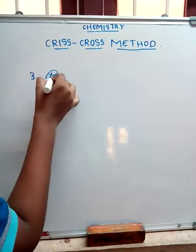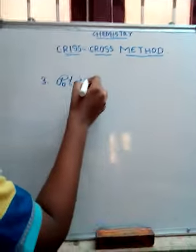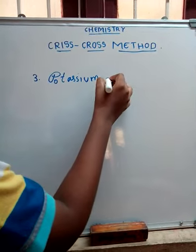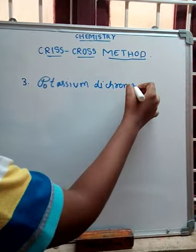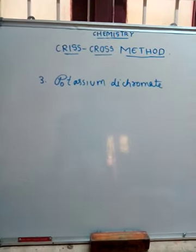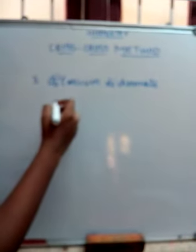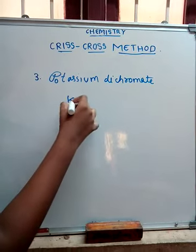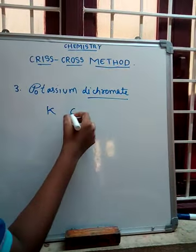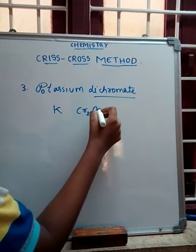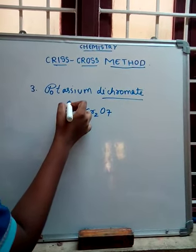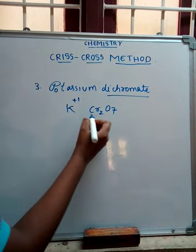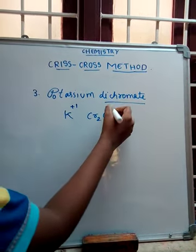And it is potassium dichromate. Potassium symbol is K, and dichromate symbol is Cr2O7. Potassium valence is plus 1, and dichromate valence is minus 1.